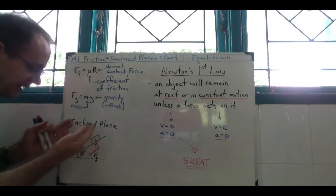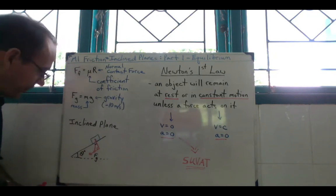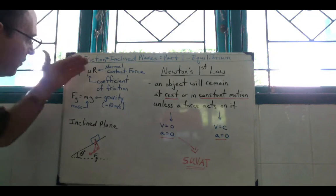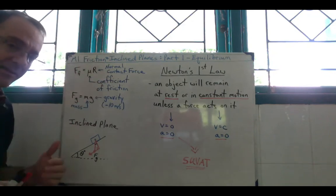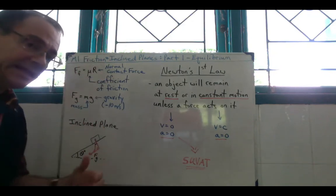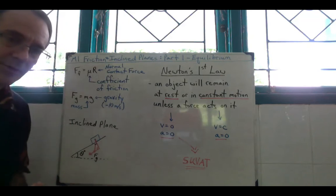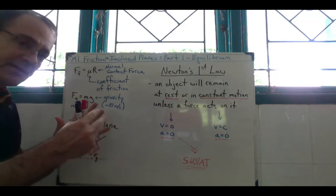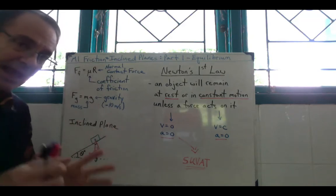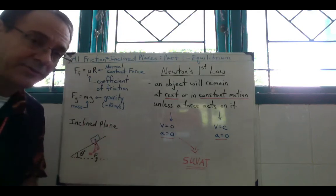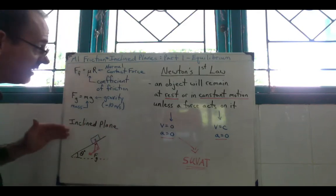The cosine value helps us figure out the normal contact force, and the sine value gives the gravity component acting down the slope — the part of gravity pulling on the object itself. These are the additional layers we're building into the foundation of distance, velocity, acceleration, and the skill of resolving forces.